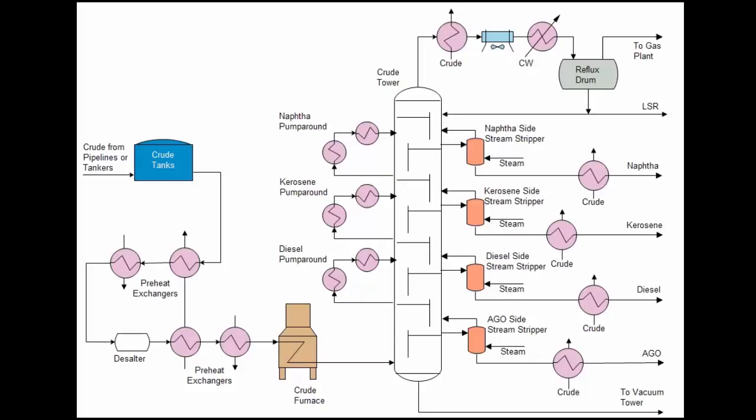The goal of the crude unit is to separate the crude into a number of different fractions, such as naphtha, which is essentially gasoline boiling range material, kerosene, often used as jet fuel and diesel. However, it also produces some heavier streams which will undergo additional processing. Much of this additional processing will be aimed at producing more gasoline.